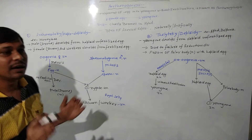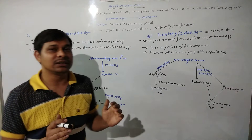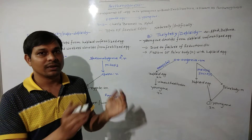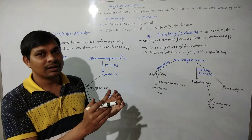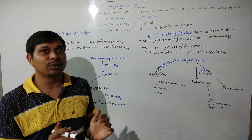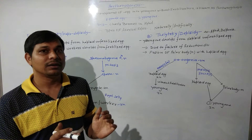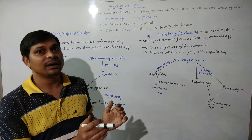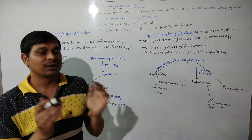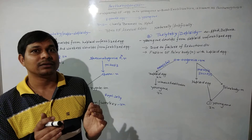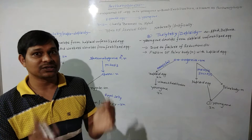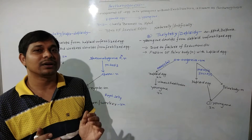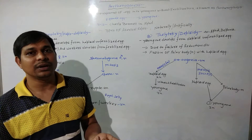In the Honeybee case, there are three types of organisms: Male, which is the Drone, and it is haploid. Female, that is the Queen, is diploid, and Worker is also diploid.